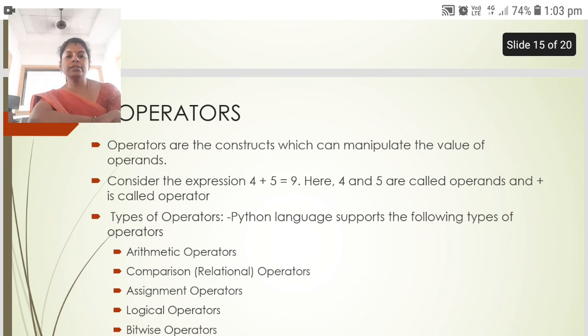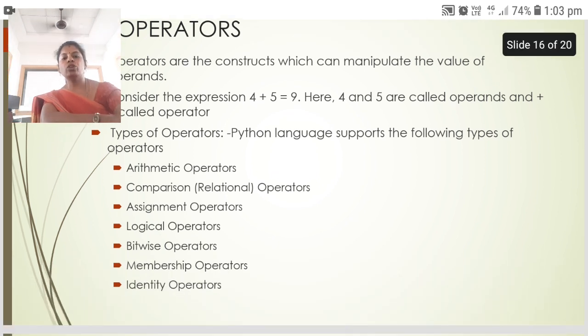The next is operators. Operators are the constructors which can manipulate the value of operands. Consider the expression 4 plus 5 equal to 9. Here, 4 and 5 are called operands and the plus is called operator. There are types of operators: arithmetic operators, comparison operators, assignment operators, logical operators, bitwise operators, membership operators, identity operators.